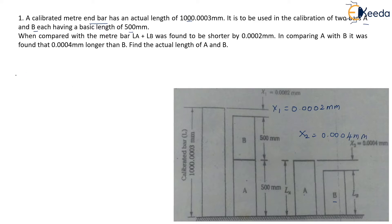So now we will write down all the given data. So capital L that is the actual length of the calibrated bar is 1000.0003 mm and LA that is length of the bar A is 500 mm. LB is given as 500 mm as well.